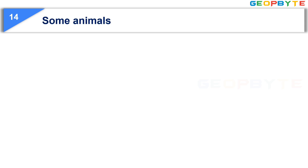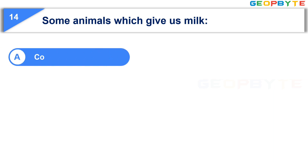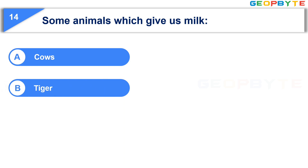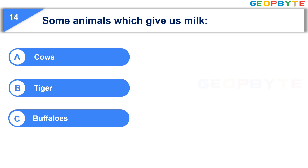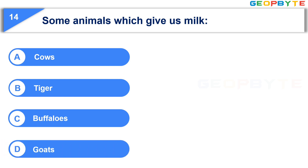The fourteenth question is: Some animals which give us milk. Option A, Cows. Option B, Tiger. Option C, Buffaloes. Option D, Goats. Your time starts now.